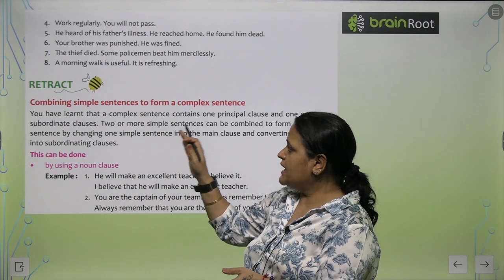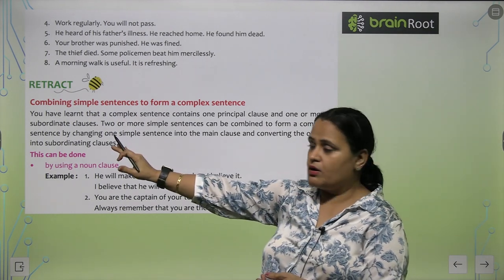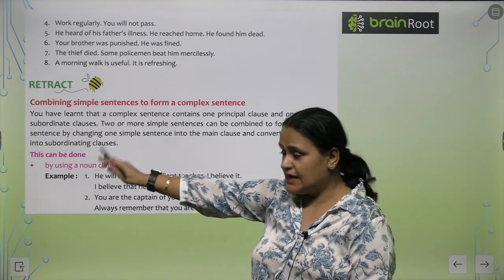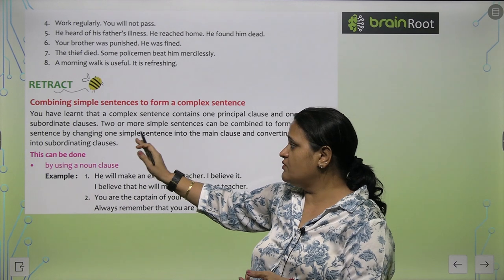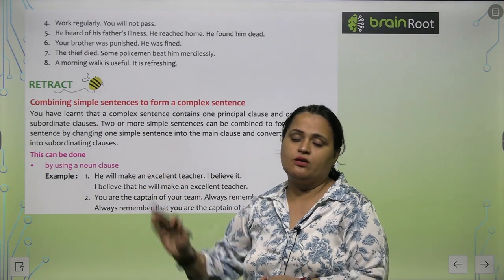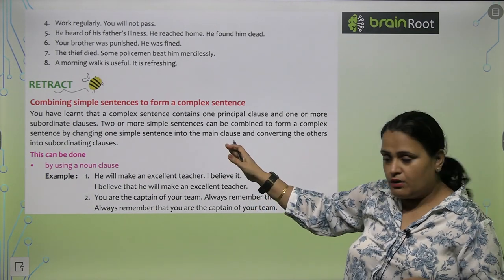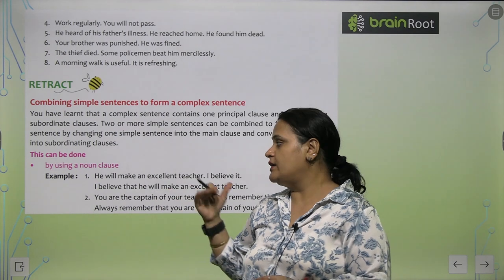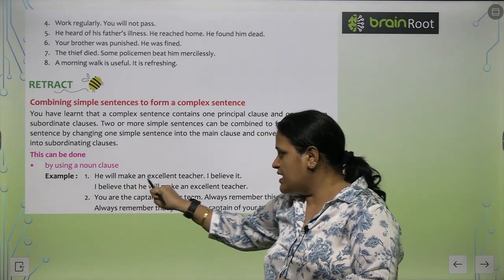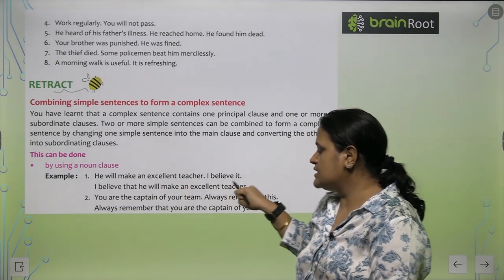A complex sentence contains one principal clause and one or more subordinate clauses. Two or more simple sentences can be combined to form a complex sentence by changing one into the main clause and converting the other into a subordinating clause. This can be done by using a noun clause — for example: 'He will make an excellent teacher. I believe it.' Combined: 'I believe that he will make an excellent teacher.'